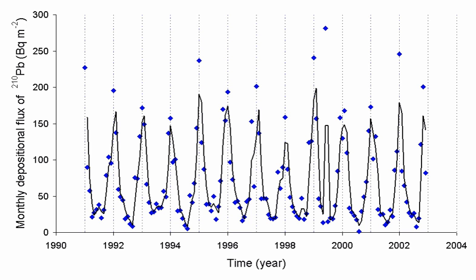High concentrations of radon in homes were discovered by chance in 1985 after the stringent radiation testing conducted at a nuclear power plant entrance revealed that Stanley Watras, an engineer at the plant, was contaminated by radioactive substances. Typical domestic exposures are of approximately 100 becquerels per cubic meter indoors. Some level of radon will be found in all buildings. Radon mostly enters a building directly from the soil through the lowest level in the building that is in contact with the ground. High levels of radon in the water supply can also increase indoor radon air levels.